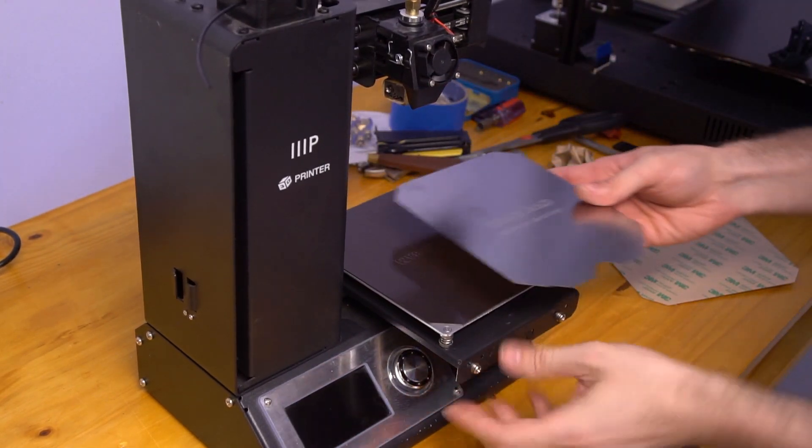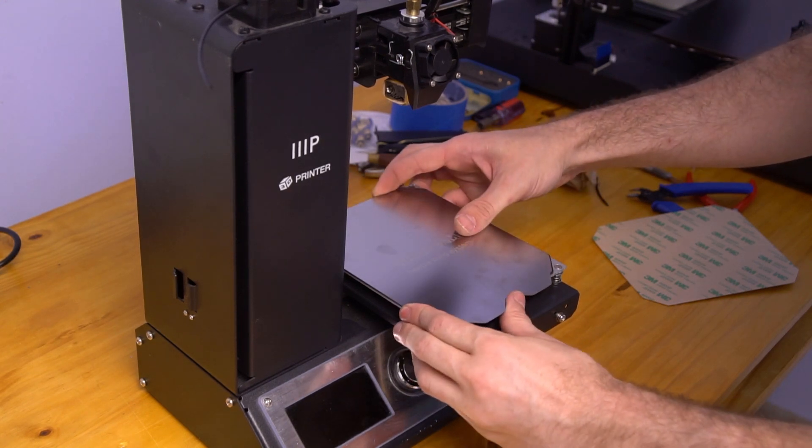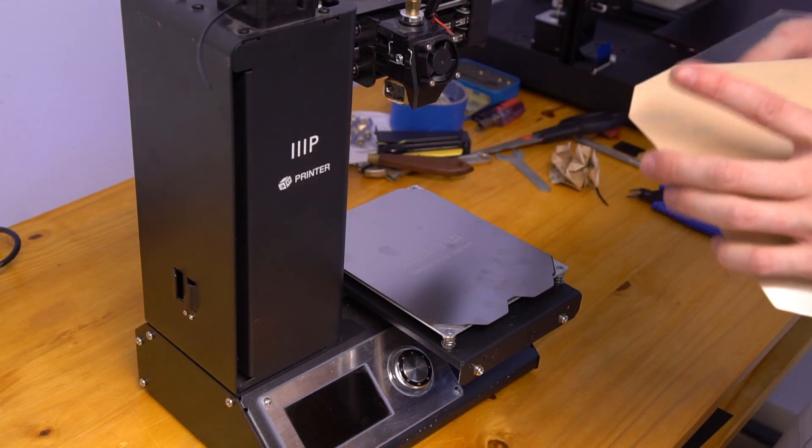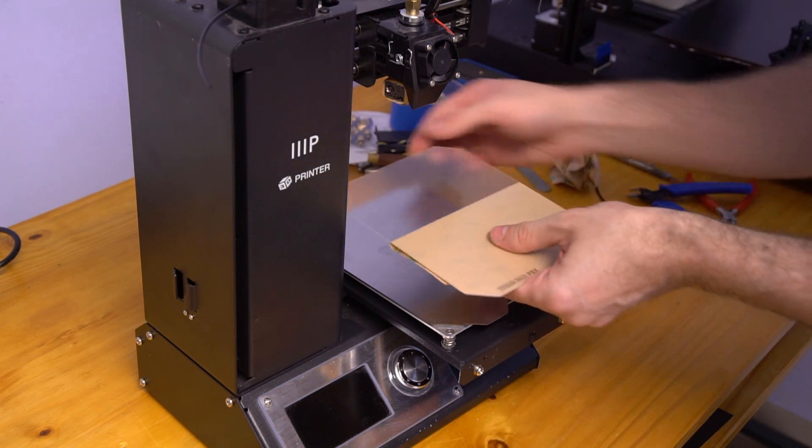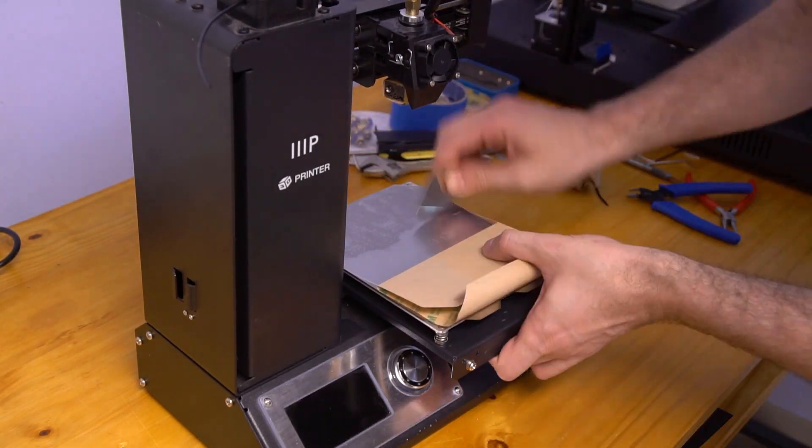I cleaned the heated bed one last time and laid the magnetic sheet in place. Next, I popped in the spring steel sheet. And nowadays, these kits come preassembled, but I got this earlier in the year, so I had to stick down and treat the build surface myself. No big deal, just a little burnishing to remove air bubbles, and a little scuffing with steel wool to make the surface stick a little better.